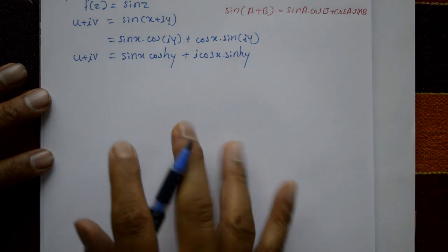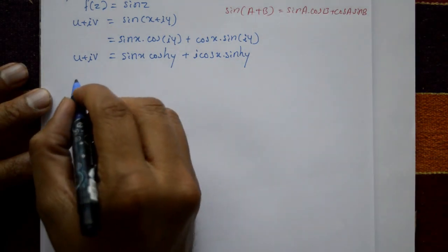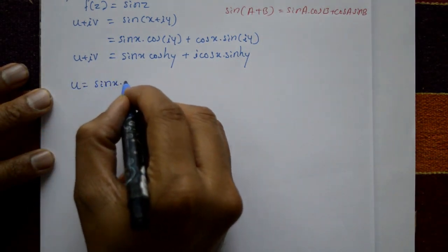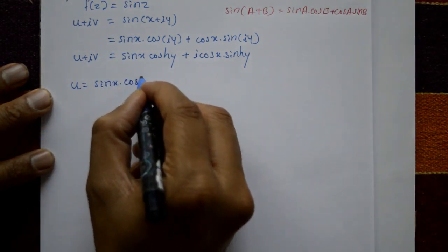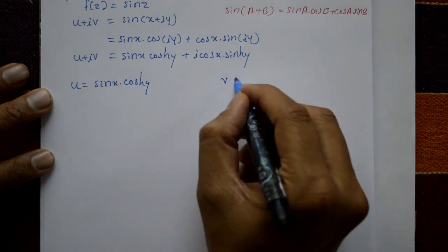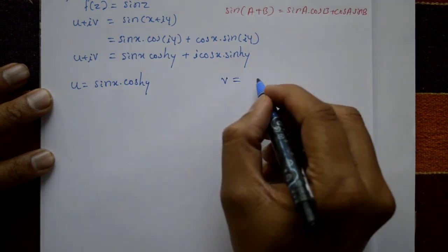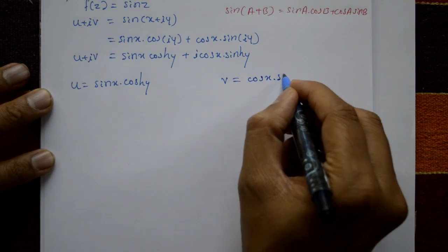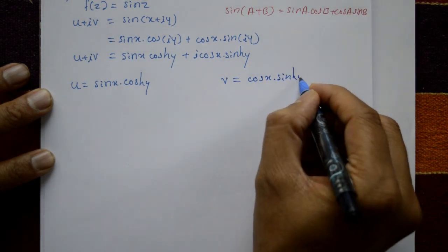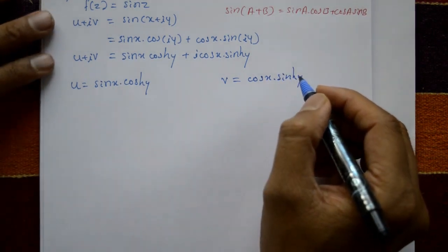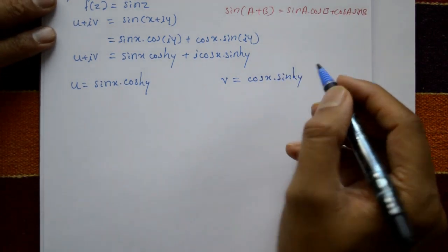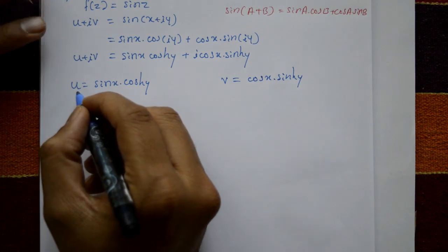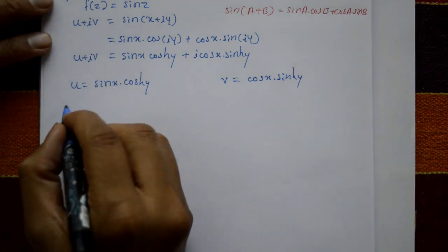Taking the real part: u equals sin x·cosh y. Taking the imaginary part: v equals cos x·sinh y. Now we satisfy the Cauchy-Riemann equations.